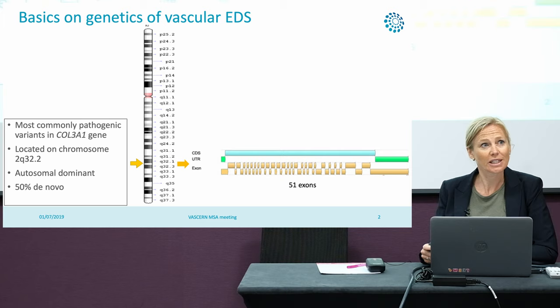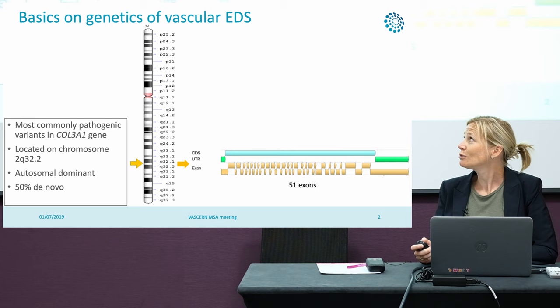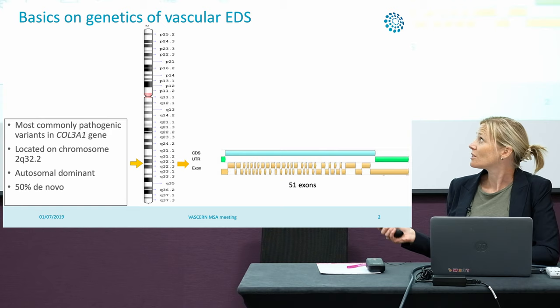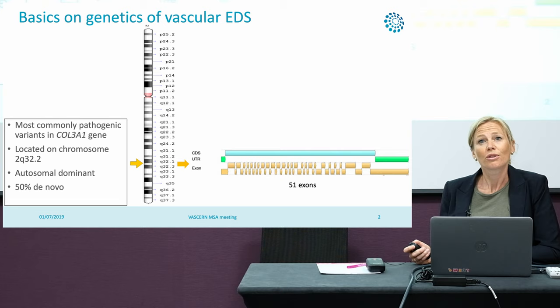Most commonly, pathogenic variants in the COL3A1 gene are found in vascular EDS patients, and occasionally specific variants in the COL1A1 gene are found. The gene is located on chromosome 2. This is a schematic representation of chromosome 2, and on the long arm, in band 32.2, the COL3A1 gene is located.